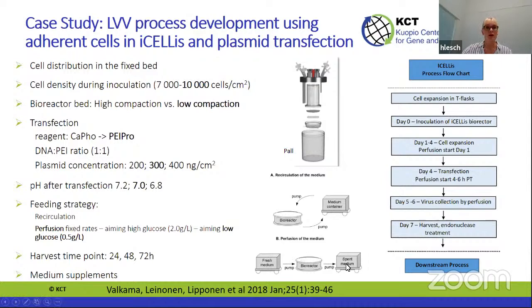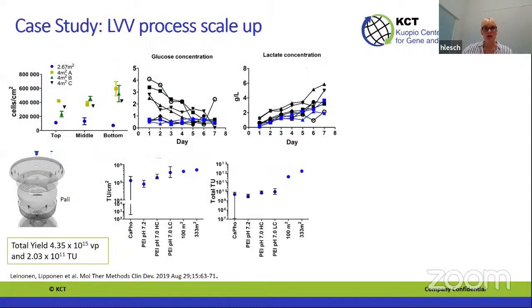We optimized harvest time points and media supplements. Our results showed better cell distribution in the low compaction bed, which likely explains the higher productivity. We also optimized perfusion to keep glucose levels controlled, maintaining the same cell growth while using less media and keeping lactate production in control. After optimizing process parameters at small scale, we were ready for our first scale-up run.